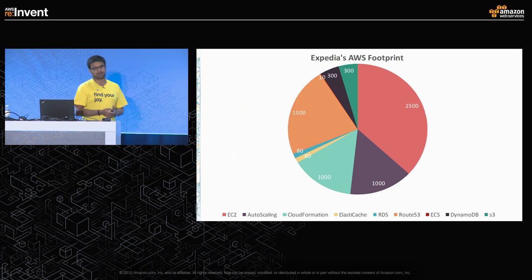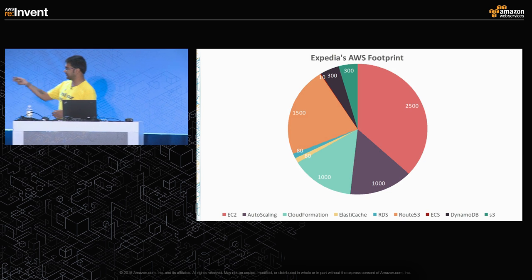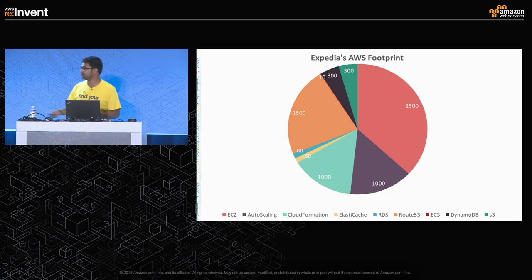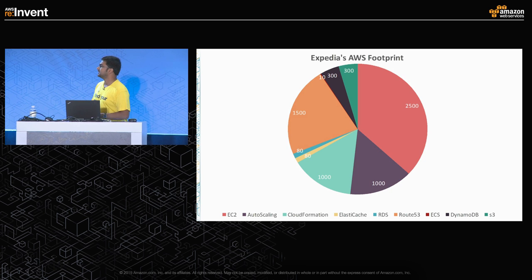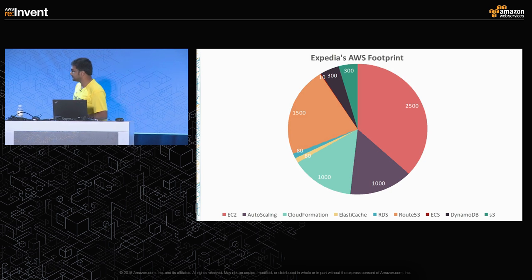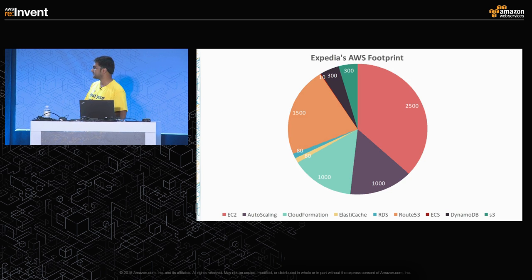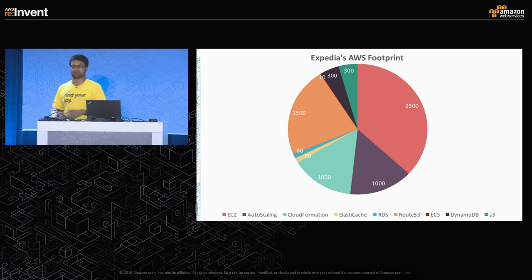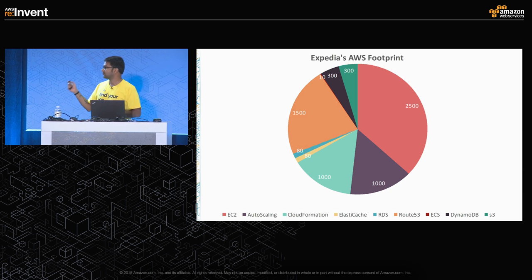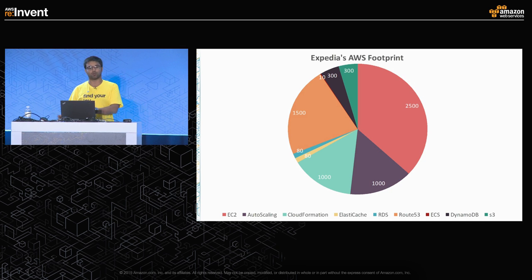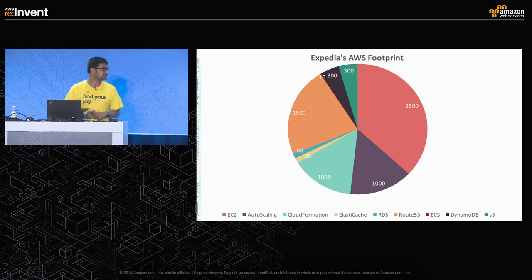This is a visual representation of the services we use in Amazon — EC2 is the biggest, then we use a lot of CloudFormation stacks, auto-scaling groups that scale based on CPU and memory utilization, RDS for relational needs, DynamoDB, ElastiCache clusters, and a lot of S3 storage. I'm going to focus on one service that uses both DynamoDB and ElastiCache.